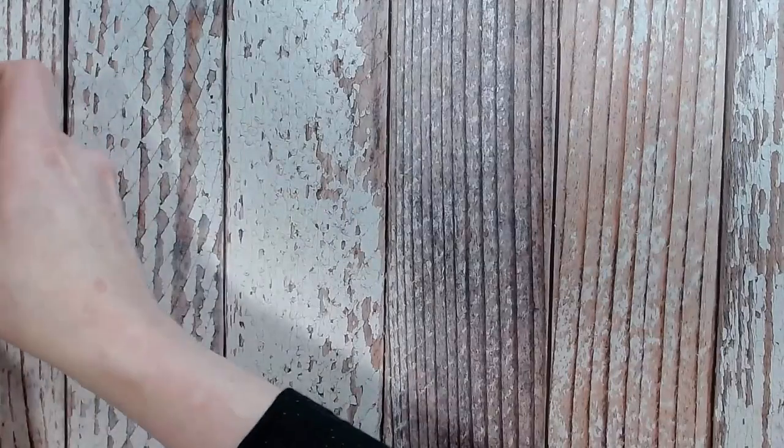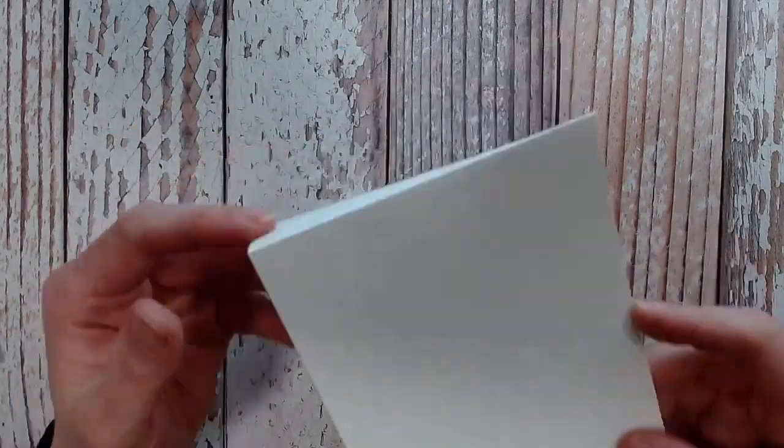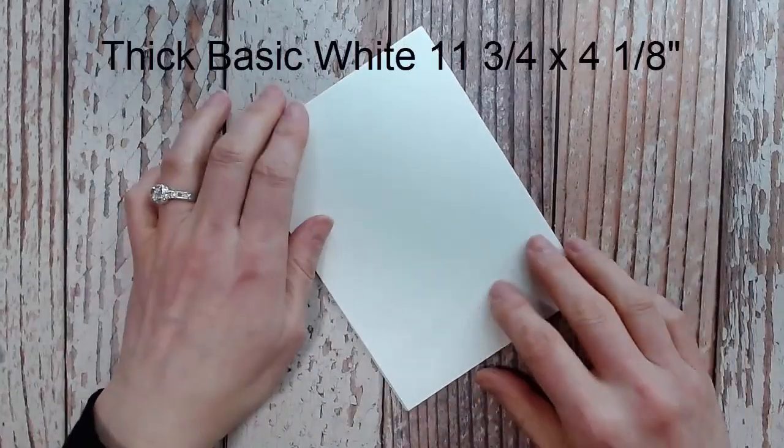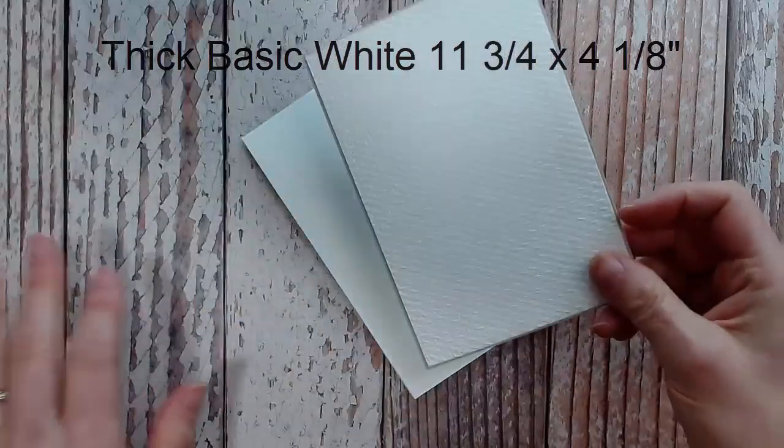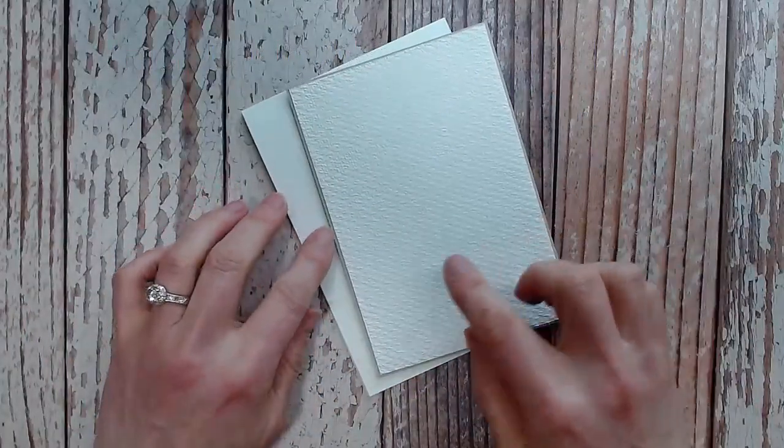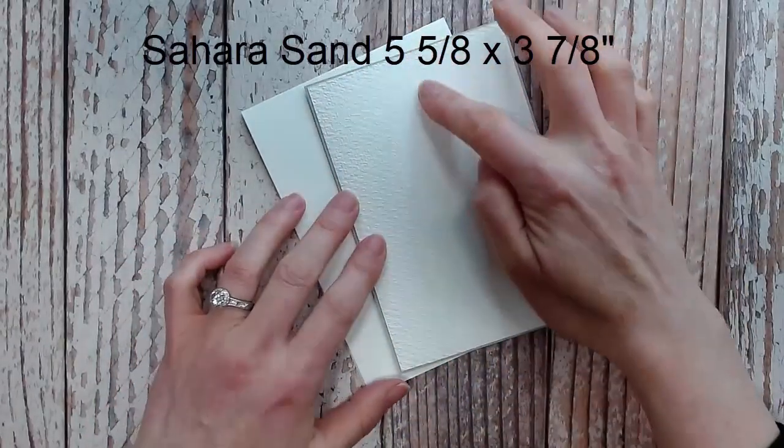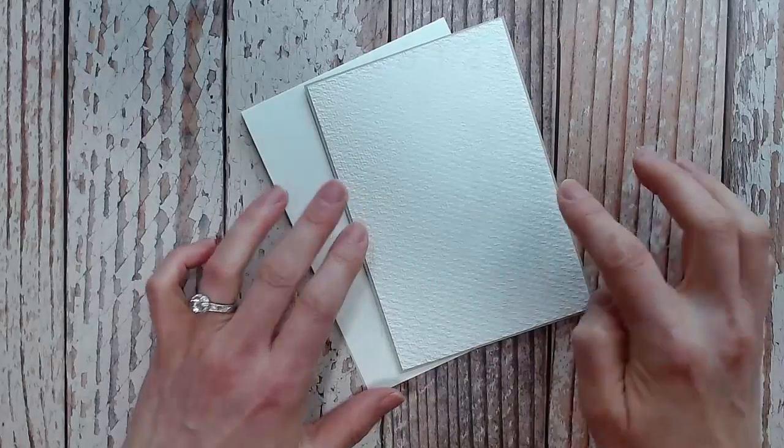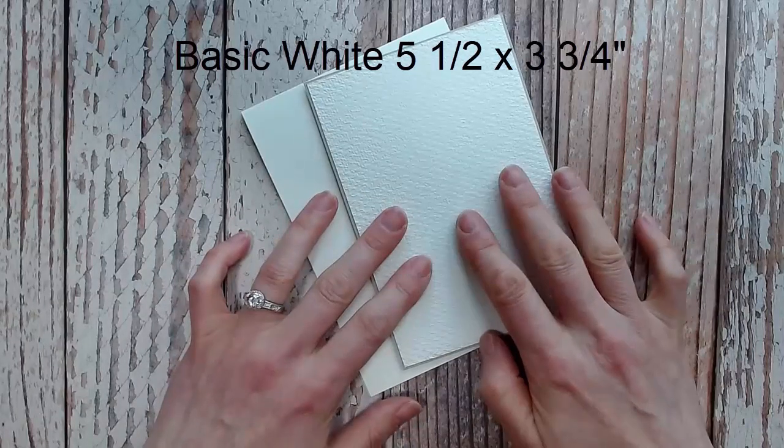I'm going to start with my card base and this is an A5 size. This is the length of our card stock which is just under 12 inches and then four and an eighth inches across. I've got my mats for the front which are Sahara Sand at five and five-eighths by three and seven-eighths, and then the white is five and a half by three and three-quarter.